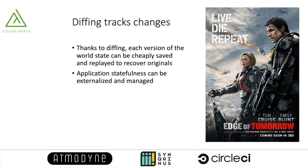Finally, diffing is very good for tracking changes. When each version of the data model can be cheaply saved and replayed to recover the original versions, a lot of interesting things can be done — for example, we can tweak the versions of the world to find one that suits a purpose. Cheap versioning also provides a way to manage the state of stateful applications, allowing states to be externalized, achieving effective stateless architecture with stateful data models.